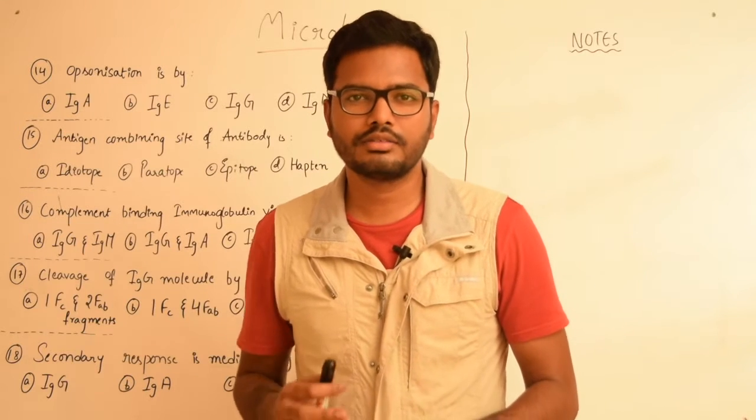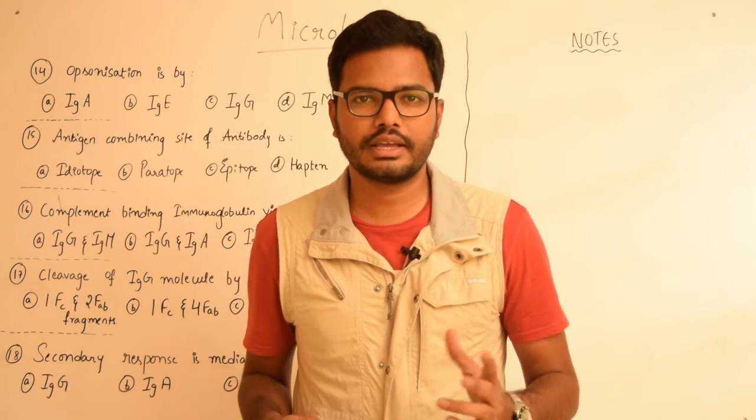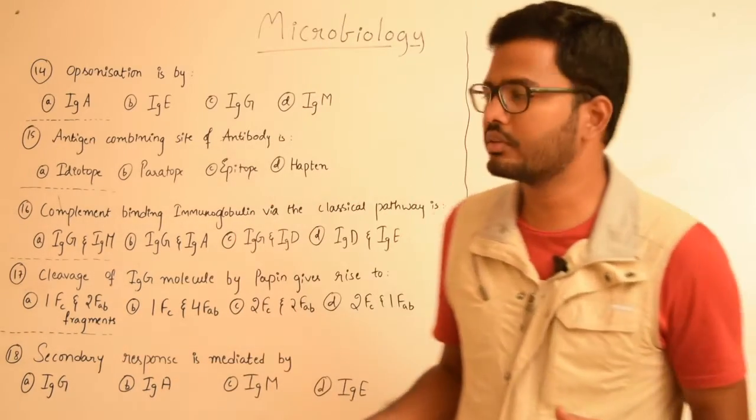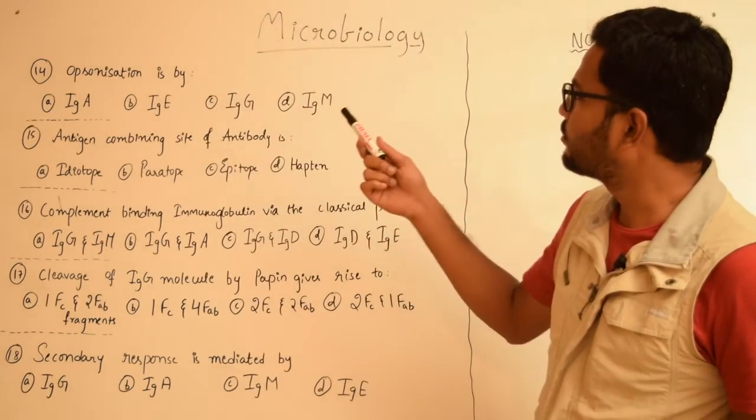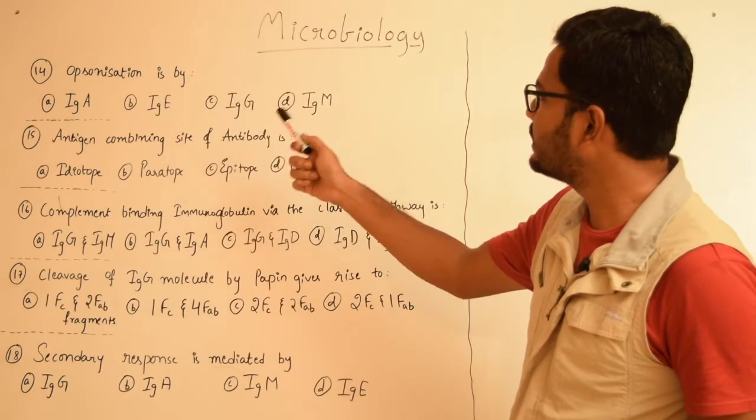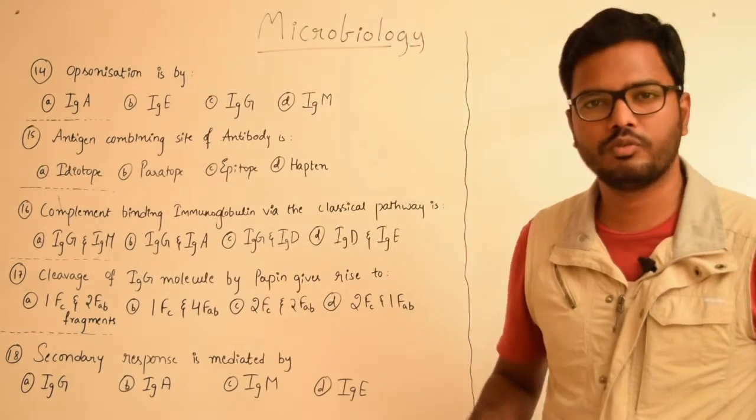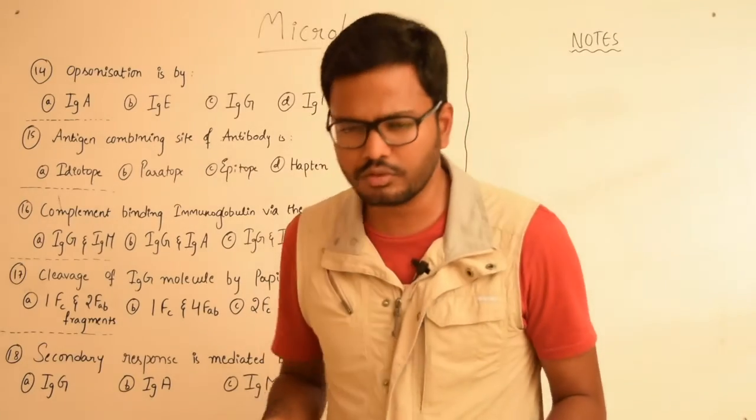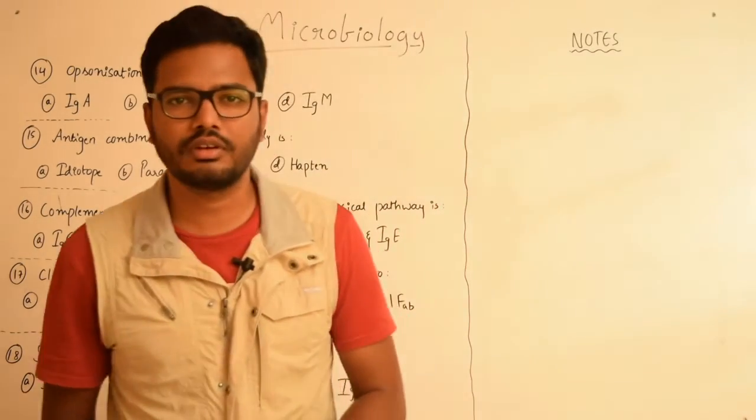Hi, in this part let's see a few more multiple choice questions in microbiology. Starting with the first one: opsonization is by IgA, IgE, IgG, and IgM. We have four options here, so first let's see what opsonization is.